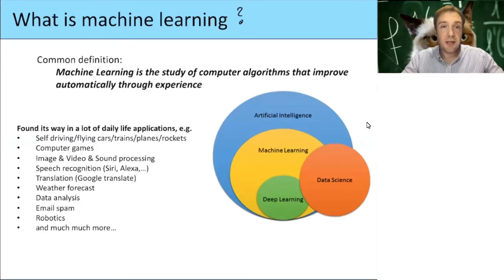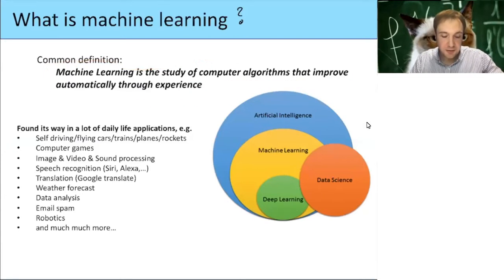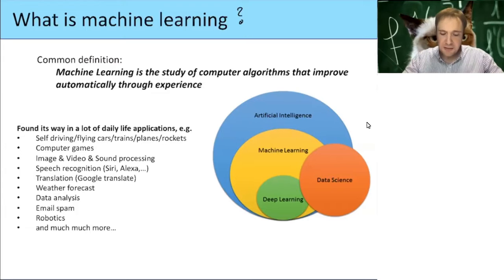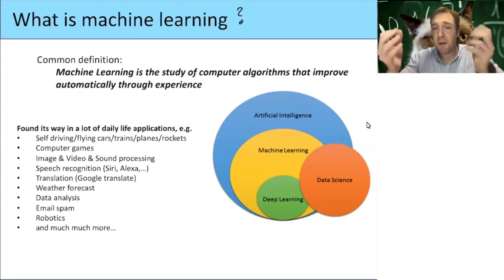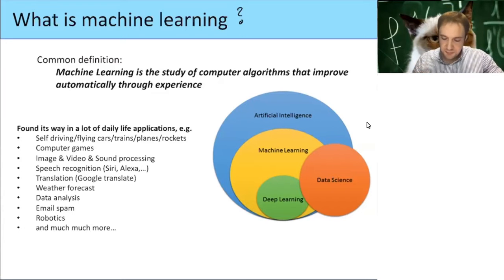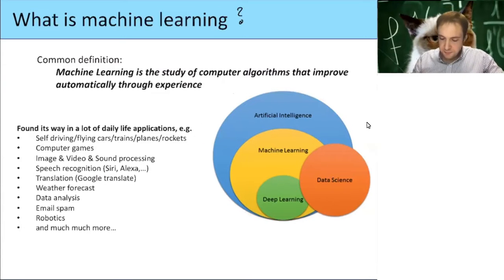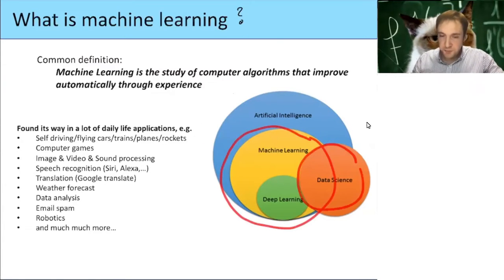There are a lot of different definitions, but one common definition is that machine learning is the study of computer algorithms that improve automatically through experience. These are machines with algorithms that get better and better over time, and usually experience means getting more and more data. Machine learning is a subfield of artificial intelligence.